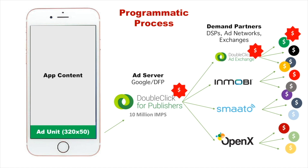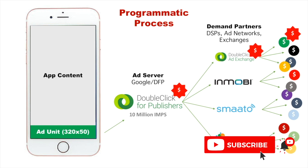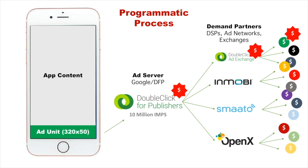If you just created your own app and game and you're a small independent developer — or even a small group — programmatic is really the way you want to go, because it gives you the most opportunity to monetize your app with essentially the least amount of work. You set up the pipes and then they run. If you're a large app, though — like ESPN — that's a different story.